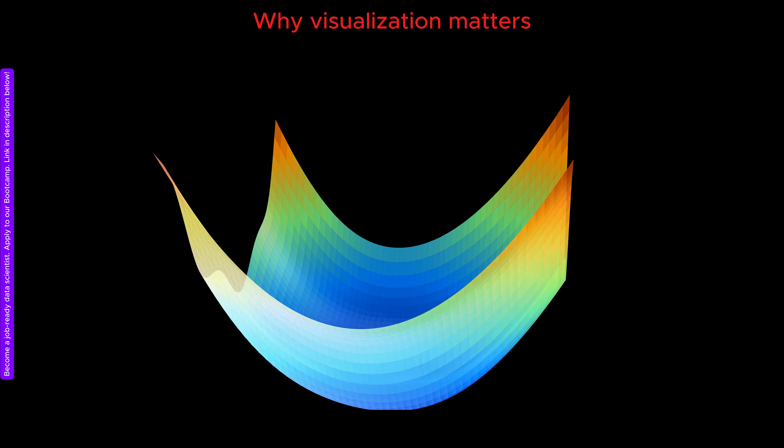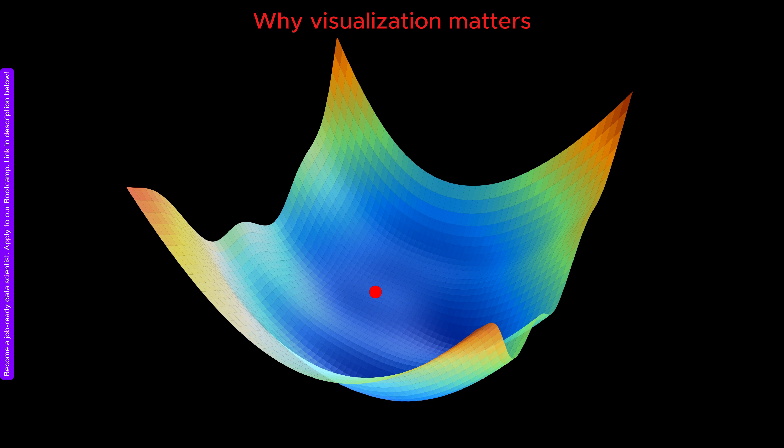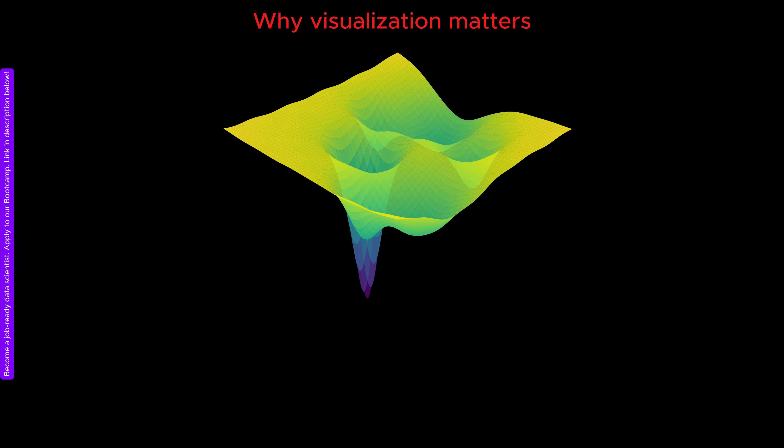A third issue is that sometimes the loss function becomes very flat in certain regions. In those flat areas, the gradient provides little to no guidance about which direction to move in. By visualizing the landscape, we can better understand where these flat regions are and how to escape them.